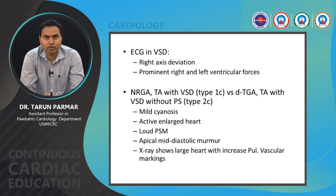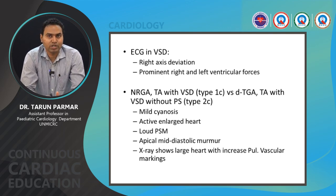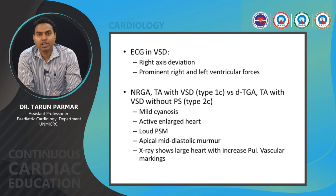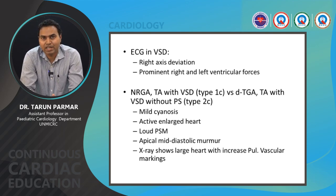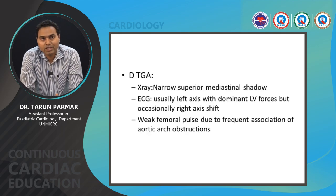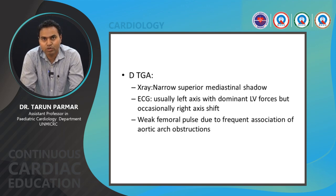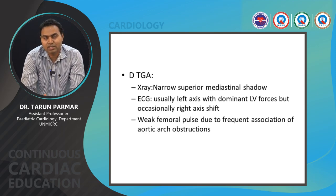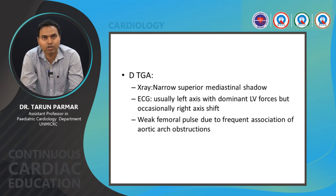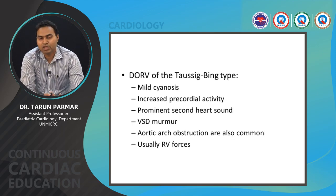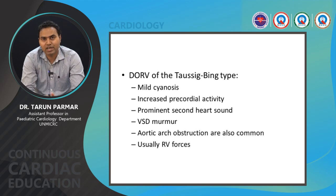Infants with tricuspid atresia and large VSD present with cardiac failure in the first few weeks of life, with a hyperactive heart, loud pansystolic murmur, apical mid-diastolic rumble, and saturations around 88–92% due to increased pulmonary blood flow. In isolated VSD, there is right axis deviation with prominent biventricular forces. In tricuspid atresia with VSD Type 1C versus D-TGA tricuspid atresia with VSD Type 2C (without PS): both show mild cyanosis, active enlarged heart, loud pansystolic murmur, apical mid-diastolic murmur, and a large heart with increased pulmonary blood flow on X-ray. In D-TGA, the X-ray shows a narrow superior mediastinal shadow, ECG usually shows left axis with dominant LV forces, and there may be weak femoral pulses due to frequent associated aortic arch anomalies.